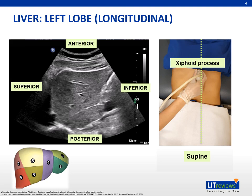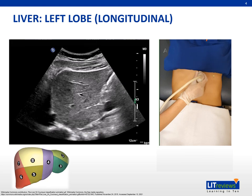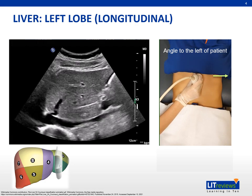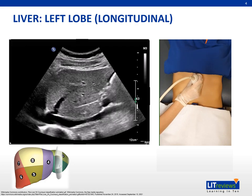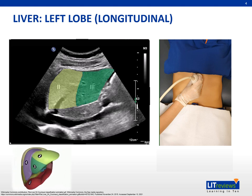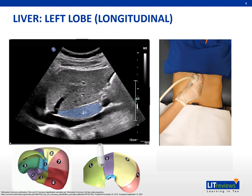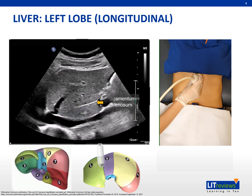The transducer is aligned parallel to the mid-sagittal plane with its superior end just below the xiphoid process. To assess the lateral segments of the liver, angle the transducer towards the left of the patient slightly. In this view, we can see segment 2 superiorly and segment 3 inferiorly. The caudate lobe, or segment 1, is separated from the left lobe by the ligamentum venosum, depicted by an echogenic line.